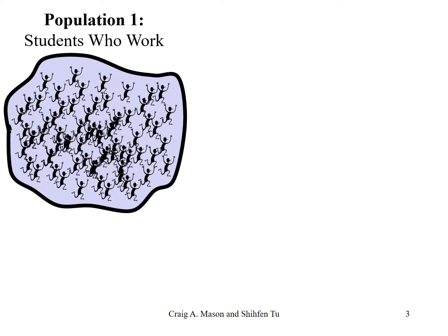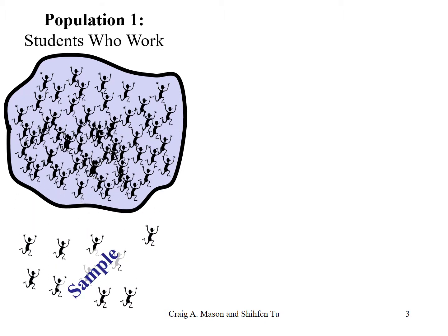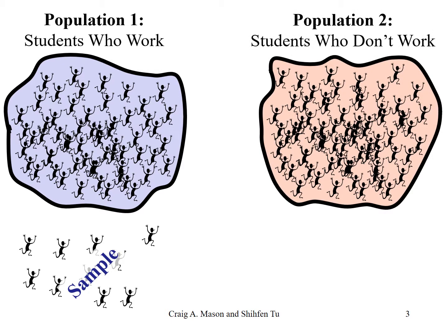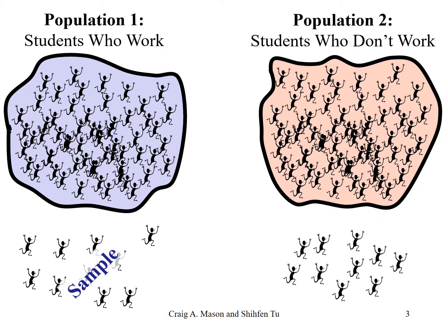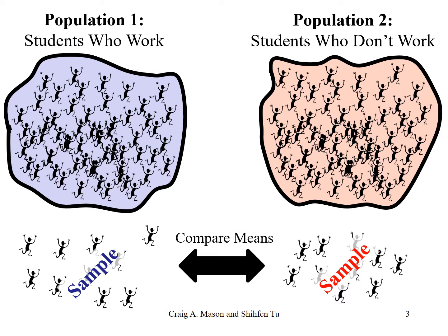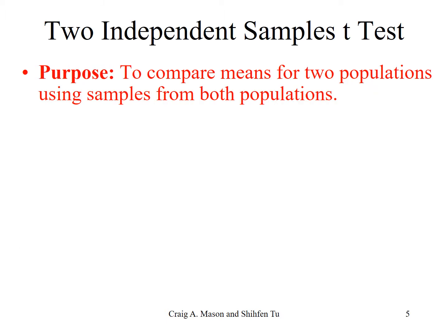So, to be clear, there is one population of students who work, and I sample from that population to estimate the average number of hours students study. Then I have a second population of students who don't work, and I sample from that population to see the average number of hours students there study. I'm then going to compare the means in these two samples in order to infer differences about their two populations. The purpose of a two independent sample t-test is to compare the means of two populations where we don't know the population mean for either of them. This is possibly the most widely used statistical test there is.